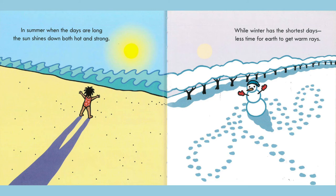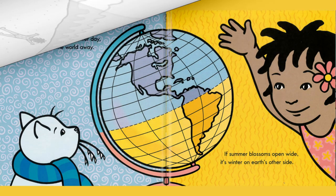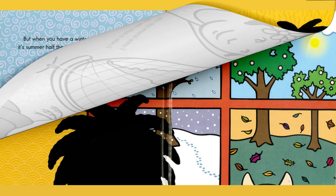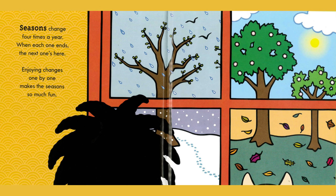While winter has the shortest days, less time for earth to get warm rays. But when you have a winter day, it's summer half the world away. If summer blossoms open wide, it's winter on Earth's other side. Seasons change four times a year — when each one ends the next one's here. Enjoying changes one by one makes the seasons so much fun.